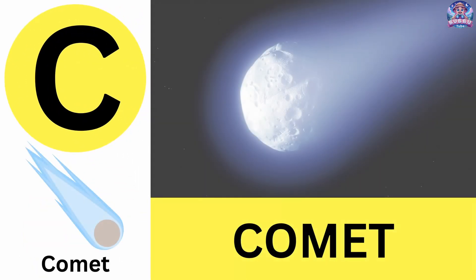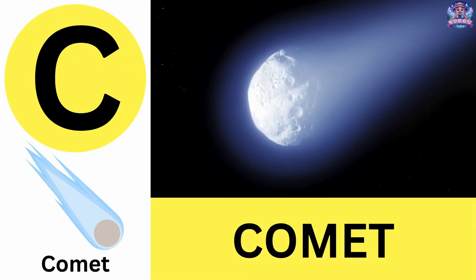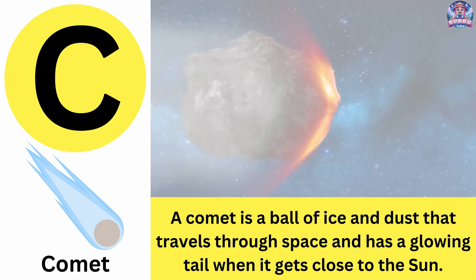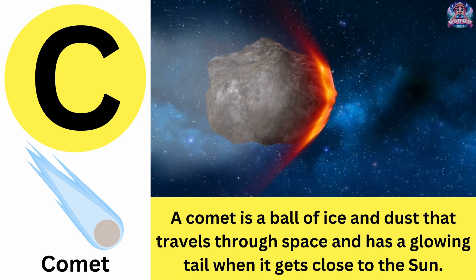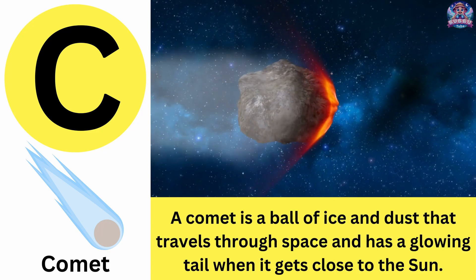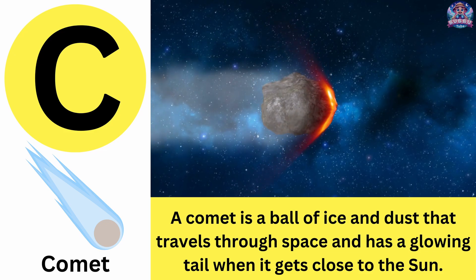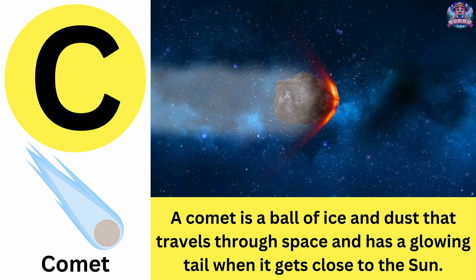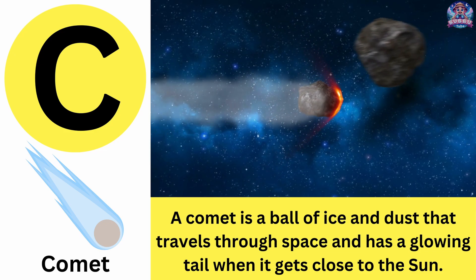C. C is for comet. A comet is a ball of ice and dust that travels through space and has a glowing tail when it gets close to the sun. Comet.